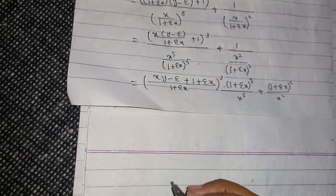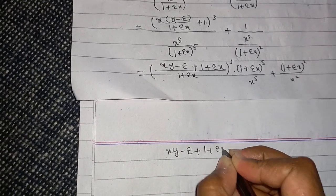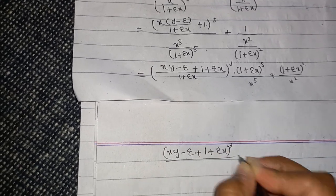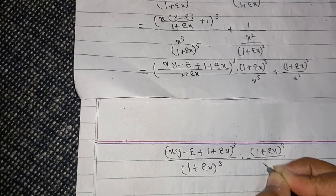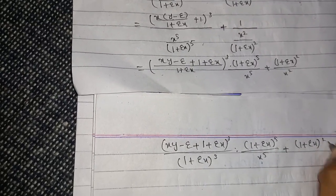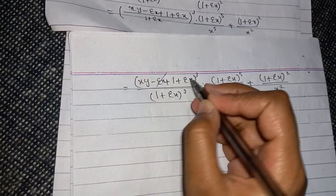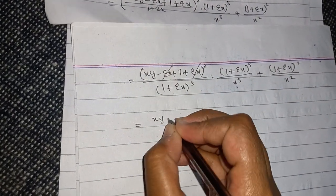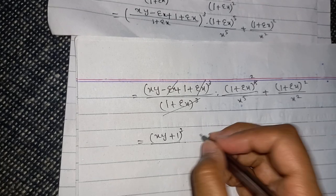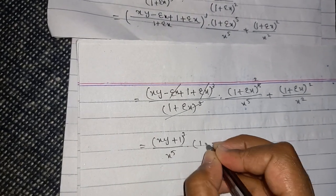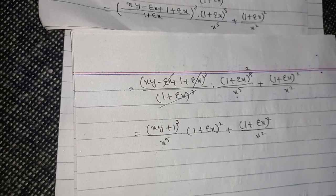Simplifying, we get (x*y minus epsilon + 1 + epsilon*x)^3 divided by (1 + epsilon*x)^3, times (1 + epsilon*x)^5 over x^5, plus (1 + epsilon*x)^2 over x^2. Here, epsilon*x and epsilon*x cancel with each other, leaving (x*y + 1)^3. Three of these (1 + epsilon*x) factors cancel, leaving x^5 times (1 + epsilon*x)^2 plus (1 + epsilon*x)^2, all divided by x^2.